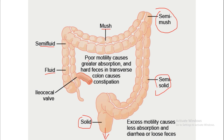If the motility of the large intestine is reduced, it causes greater absorption and hard feces, leading to constipation. If motility is poor, constipation results. Conversely, excess motility causes less absorption and diarrhea — loose feces. Whenever large intestine motility is increased, it will cause diarrhea.